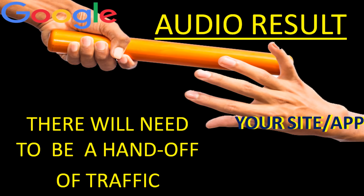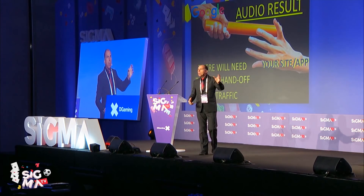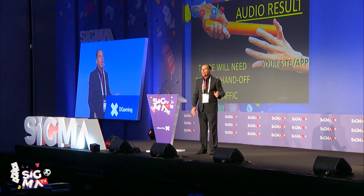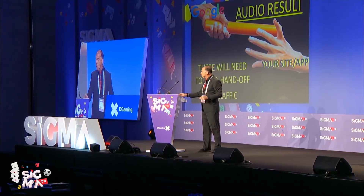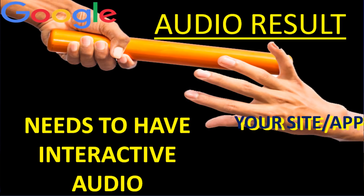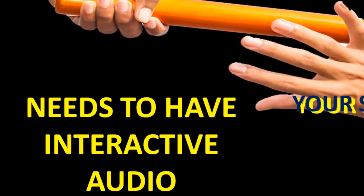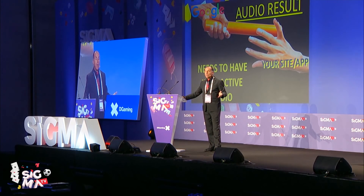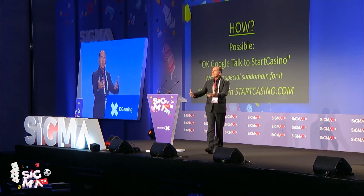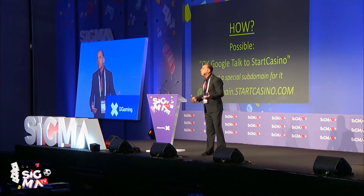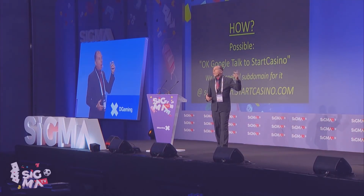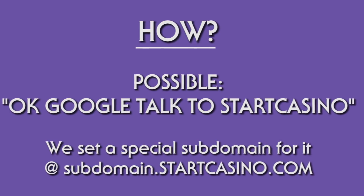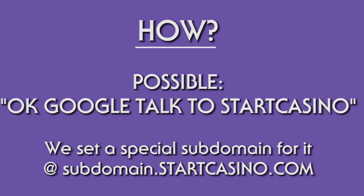If you remember when Google talked about mobile — your site had to be mobile friendly, and if someone did a mobile search, they were going to de-rank you — it would be the same thing. If your site does not have interactive audio, they will de-rank you on an audio search. How would you get this handoff from an audio search? Our team thinks it's going to be along the lines of: 'Google, talk to Start Casino.' We made a special subdomain for that just to see if it might work.